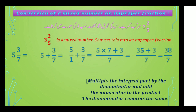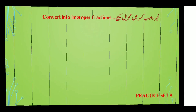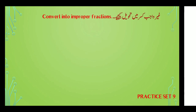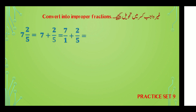اب کچھ examples لیتے ہیں — practice set 9 سے question number one: سات عدد صحیح دو بٹے پانچ دیا ہوا ہے۔ Step 1: seven + 2/5 = 7/1 + 2/5۔